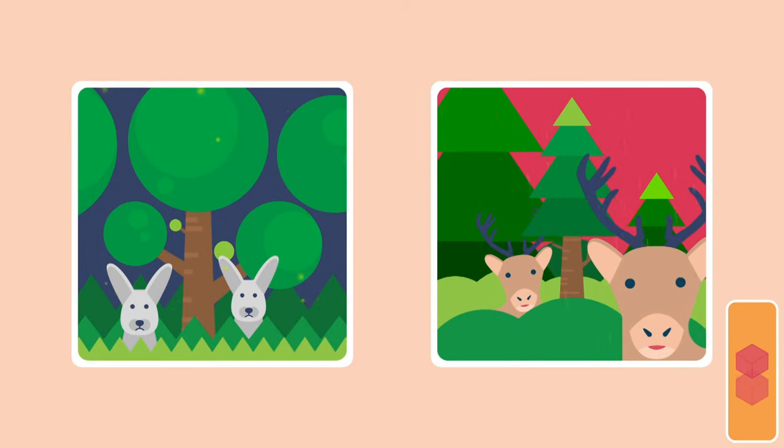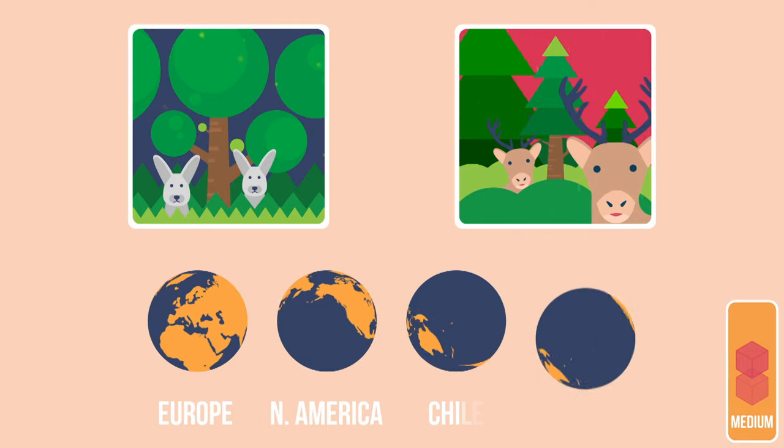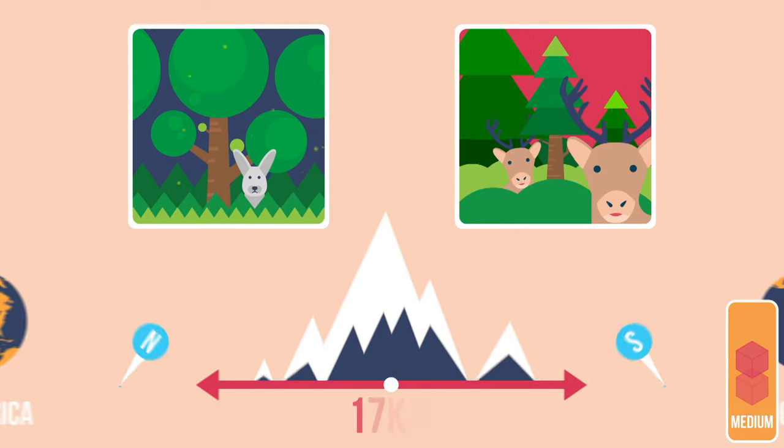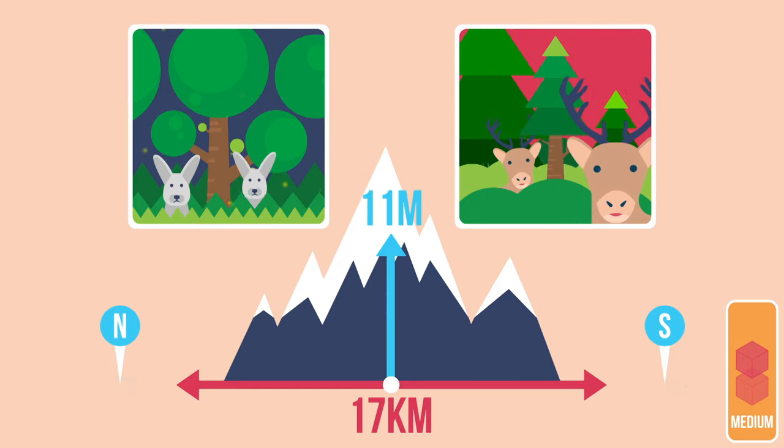And it's not just sea life that's affected. Animals and plants in Europe, North America, Chile, and Malaysia have recently moved an average of 17 kilometers towards the poles and 11 meters up in altitude to escape the heat.